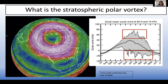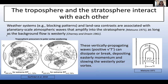Stratosphere-troposphere coupling is a two-way interaction — both upward and downward coupling occur. For upward coupling from the troposphere to the stratosphere, we're talking about how the troposphere generates waves and how those waves can sometimes go into the stratosphere and change the flow there. Weather systems, blocking patterns, and land-sea contrasts are associated with planetary-scale atmospheric waves — wave numbers one and two, the largest scale waves — and if these constructively interfere with the background waves they can amplify into the stratosphere, as long as the background flow is westerly. There's no pathway for waves to travel into the polar stratosphere in summer.